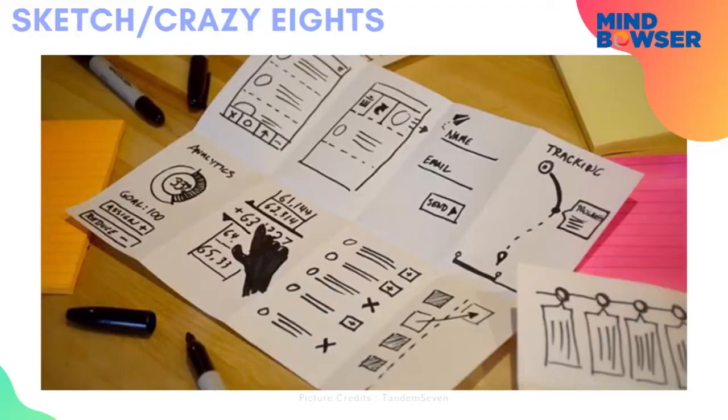It should look something like what you see on the screen right now. What happens is, at the end of every one minute, you move to the next sketch and the next rectangle on your paper, and you start sketching out a new sketch. So that turns out to be 8 variants of a single sketch in 8 minutes.